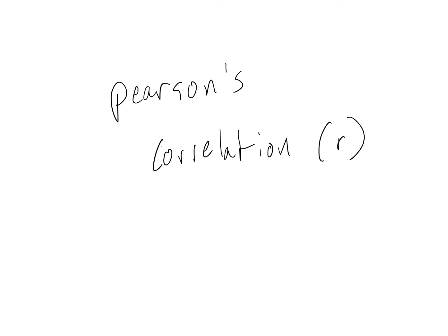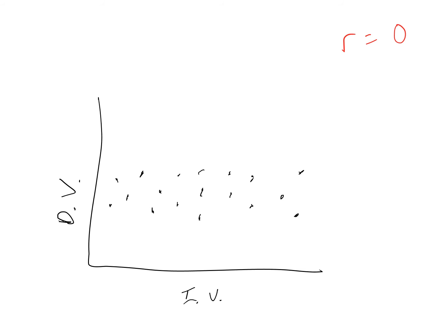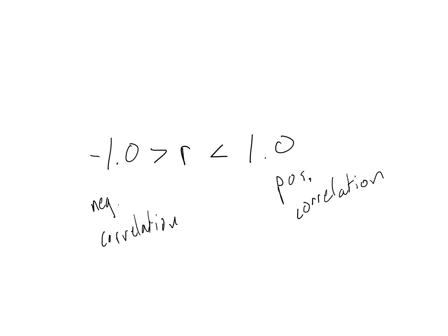The extent of correlation between the two variables is summarized by something called Pearson's correlation coefficient, which is represented by the letter R. If there's a perfect positive correlation between the dependent and independent variable, Pearson's correlation coefficient will equal 1. If there's a perfect negative correlation, it will equal negative 1. If there's no correlation, it will equal 0. To summarize, Pearson's correlation coefficient ranges from negative 1 to 1, with negative 1 being a perfect negative correlation, 1 being a perfect positive correlation, and 0 being no correlation.